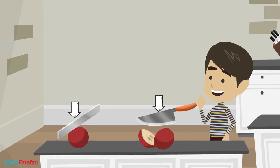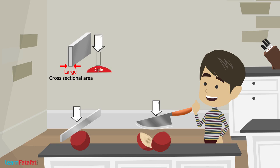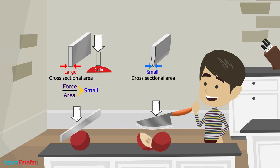Here the magic happens. Dear students, the strip has a larger cross-sectional area and so it applies force over a larger area of the apple. Area being larger, the value of force divided by area comes out to be small, which is insufficient to make a cut in the apple. However, in case of a sharp-edged knife, the cross-sectional area is very small. So if we apply equal amount of force over the knife, the resulting force divided by area on the apple is larger. As a result, the apple undergoes a cut.